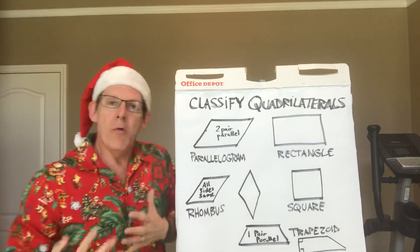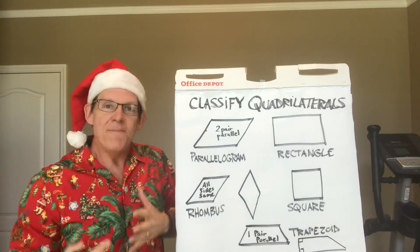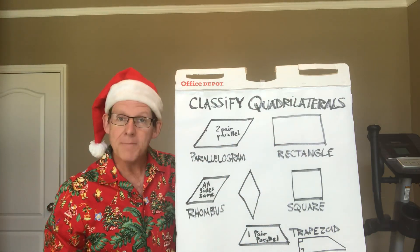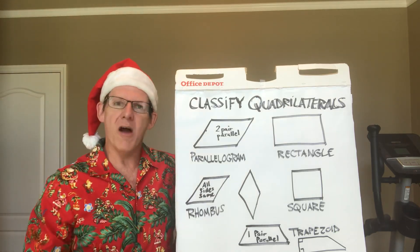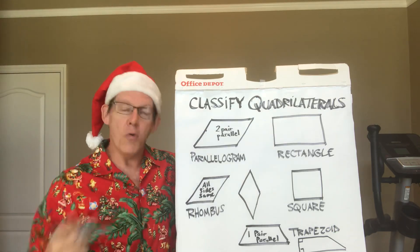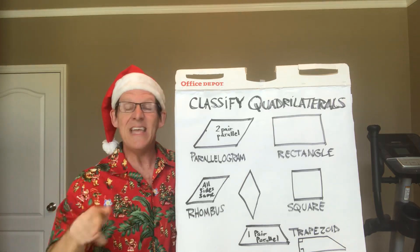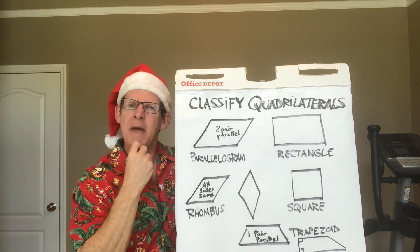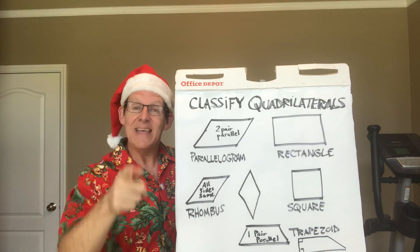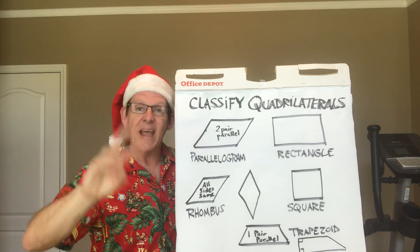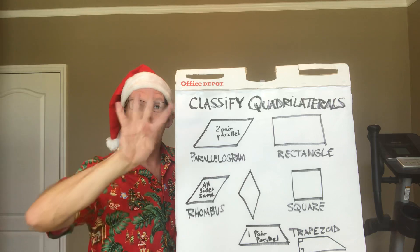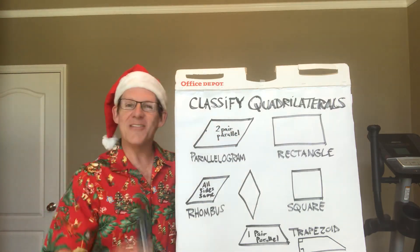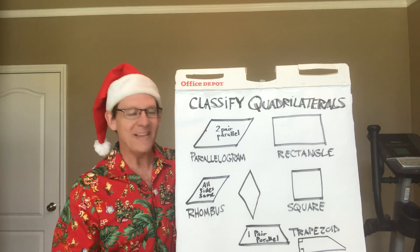It sort of made me think about when we have presents and stuff, they come in different shapes, and it reminded me of these shapes here. I thought this would be a fun way to talk about classifying quadrilaterals. So classify means to put into groups. And quadrilateral — what do you think that means? A triangle has three sides, so a quadrilateral has four sides.